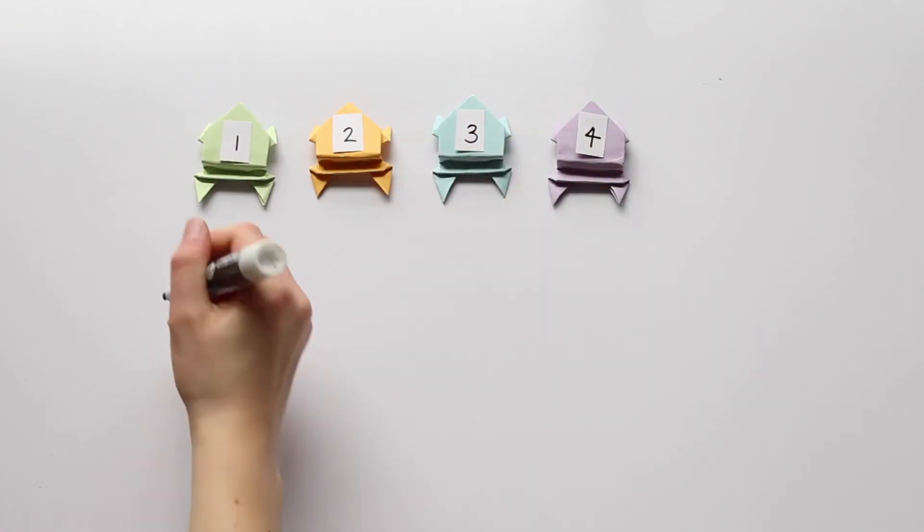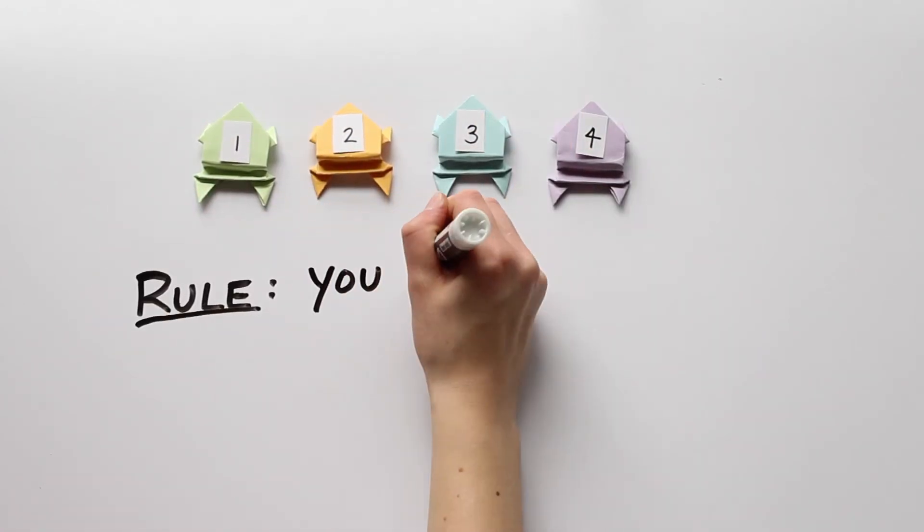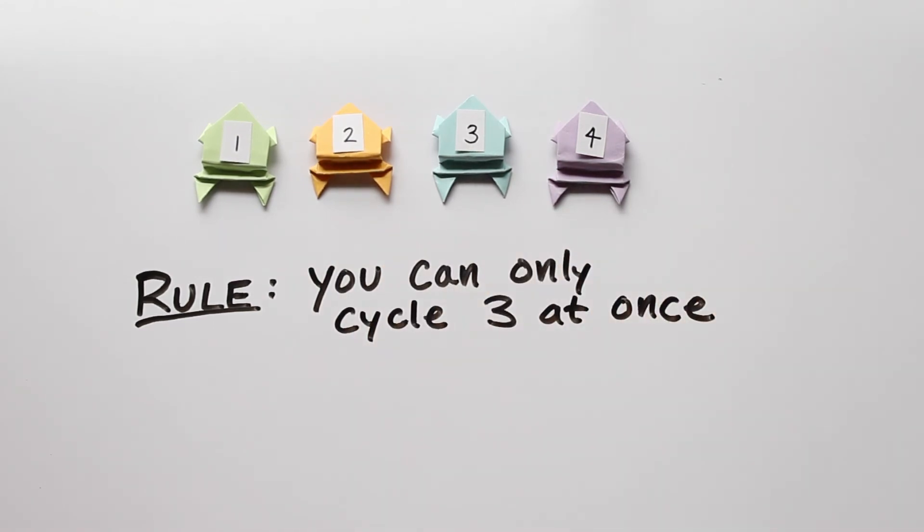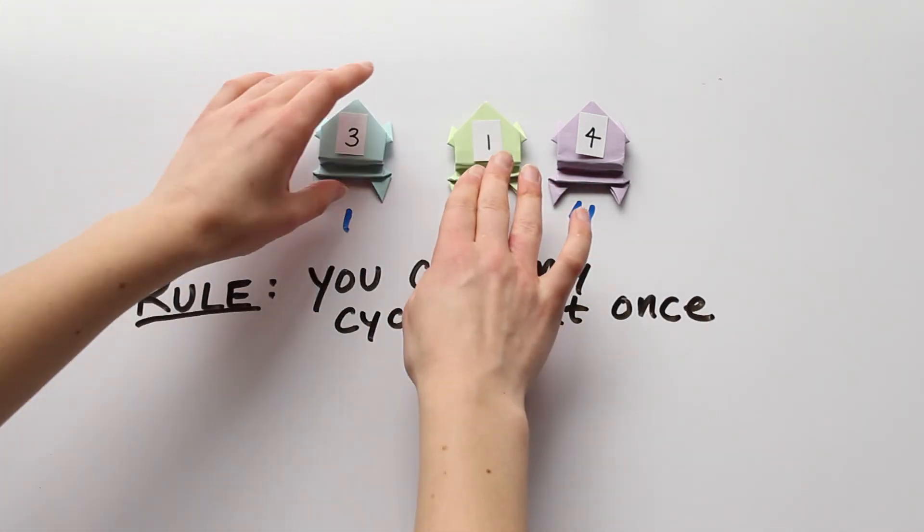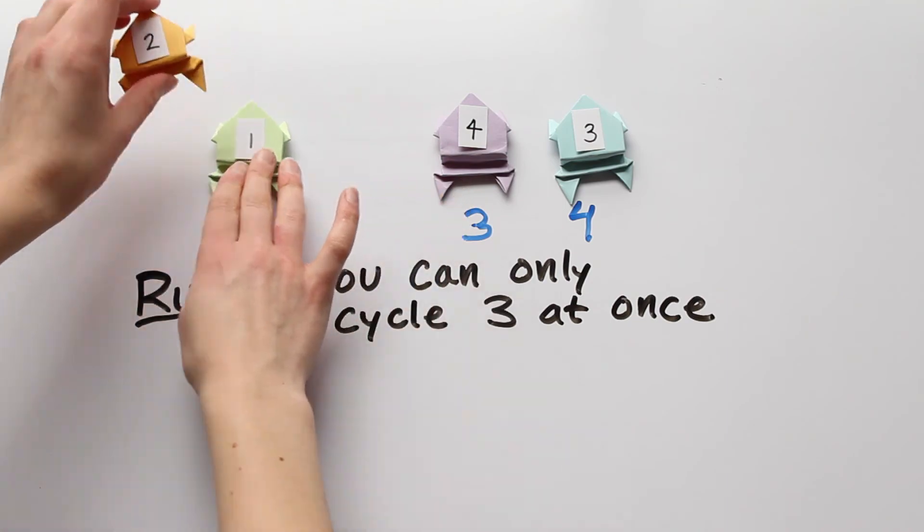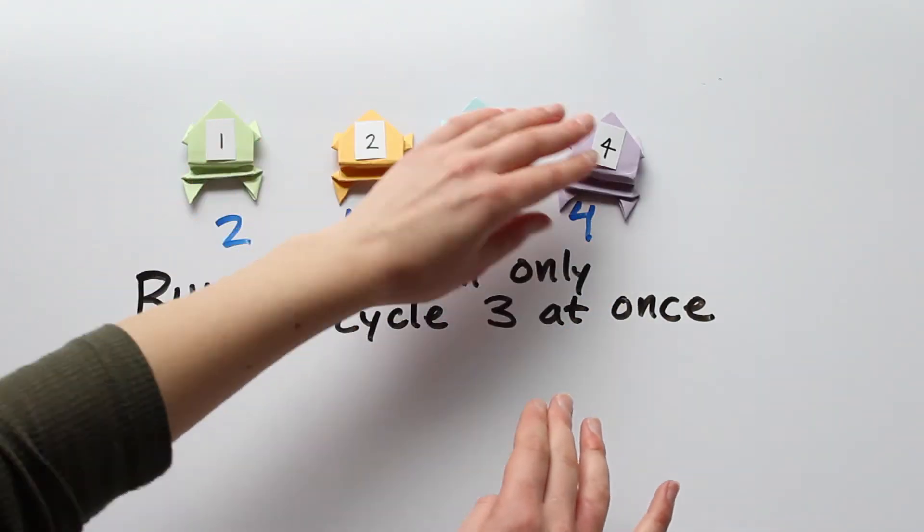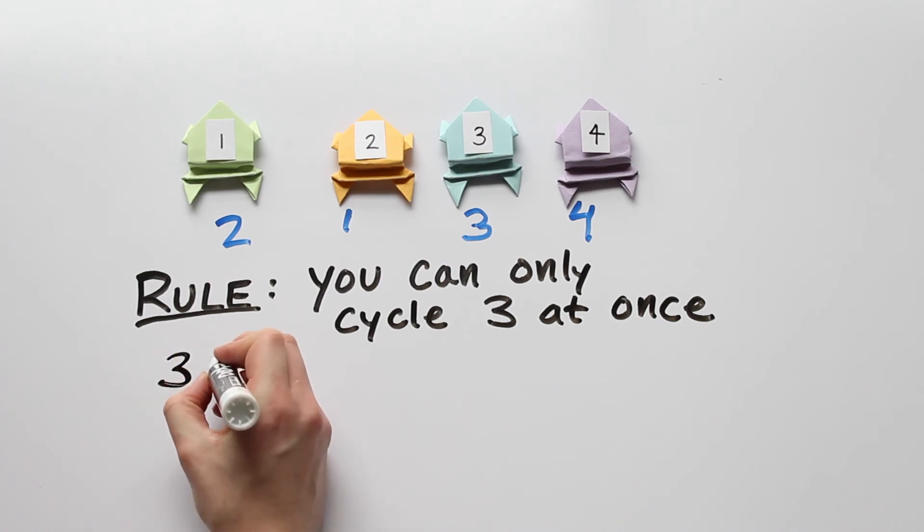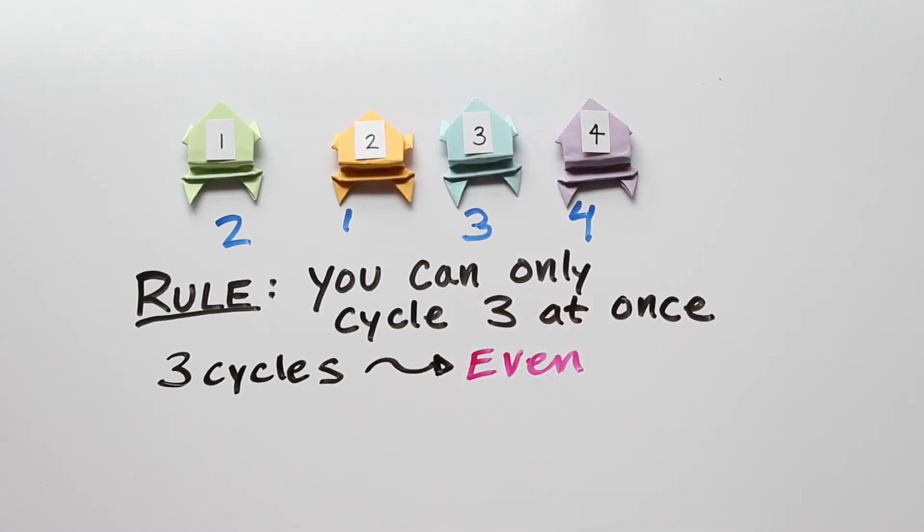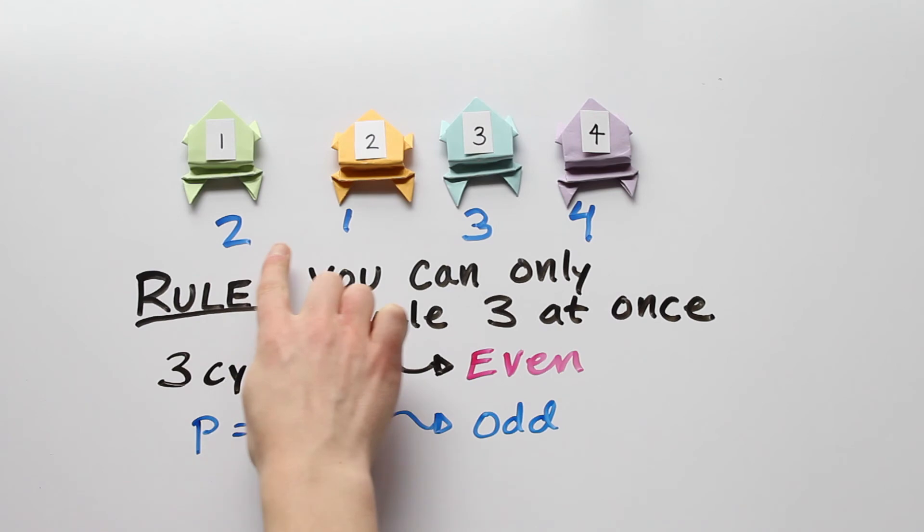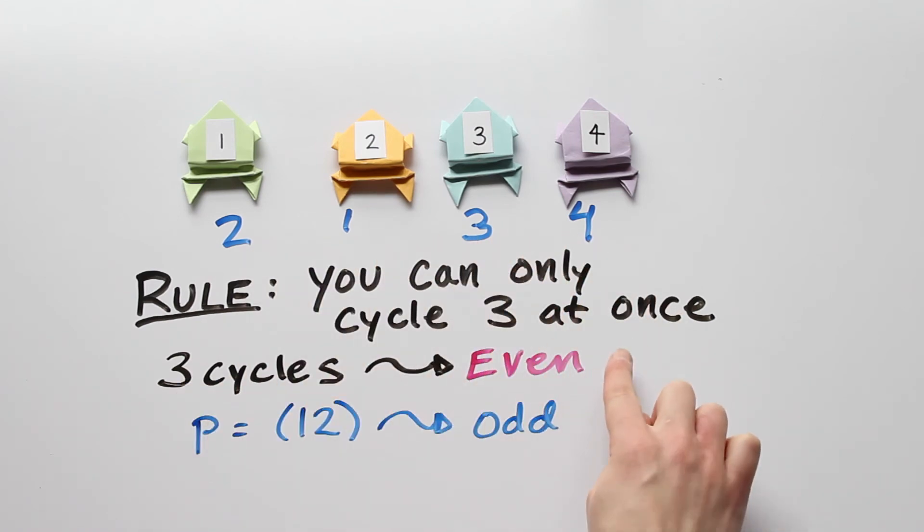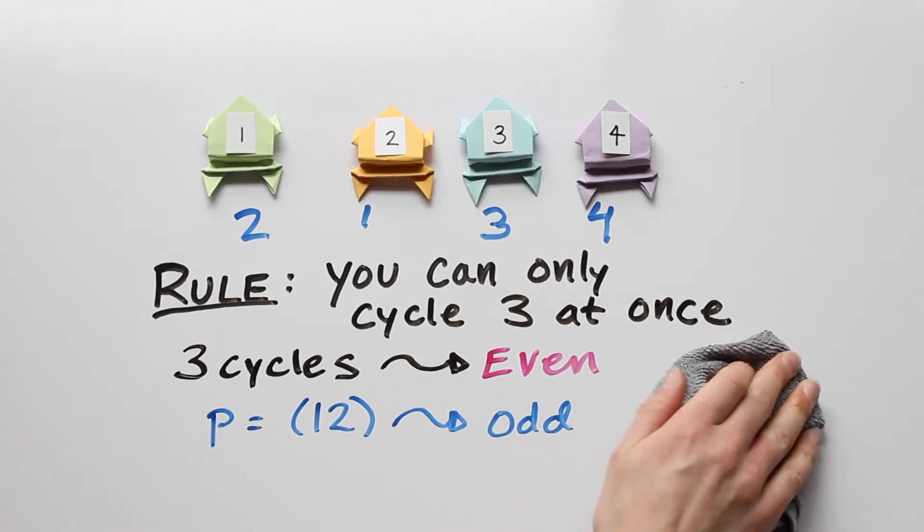To hammer home this point let's look at an example. Suppose that you can only cycle three frogs at once. And now we want to know if we can put the frogs in this order starting from the original position and using these rules. Well, we can play around with it for a little but we won't ever succeed. Notice that the three cycles are even permutations because they have an odd length. But this order of the frogs corresponds to an odd permutation because you can get this order by just switching two frogs. Since we can't add even cycles and get an odd cycle, there's no way to reach this permutation with only three cycles.